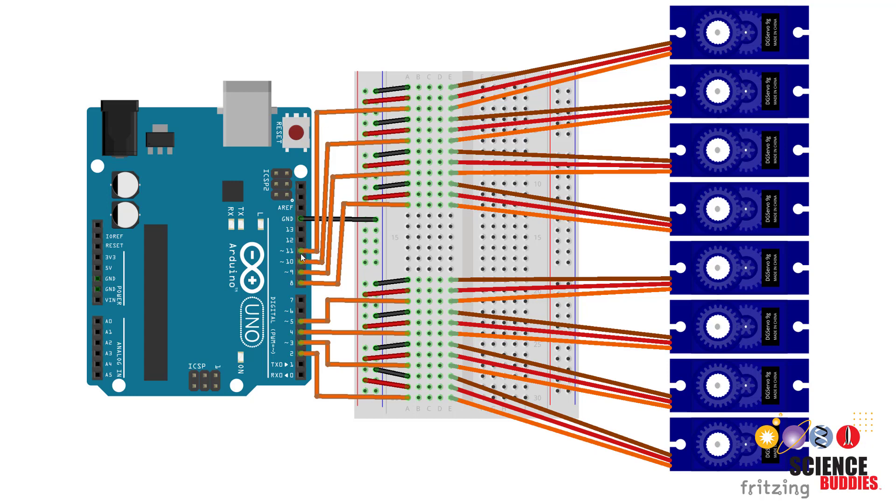The Arduino servo library can handle up to 12 servos so in theory you could use an Arduino Uno to build a hexapod robot adding two more legs but if you want to add any other sensors or outputs like LEDs to your robot you are going to run out of I/O pins on the Arduino Uno pretty quickly so if you need more legs or more sensors you might want to consider a different Arduino board.